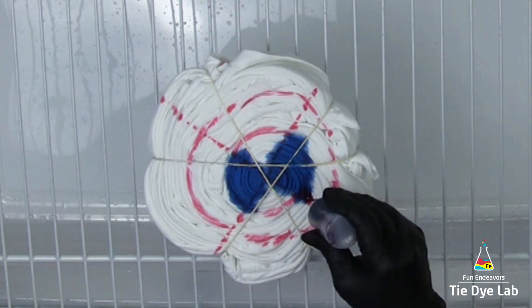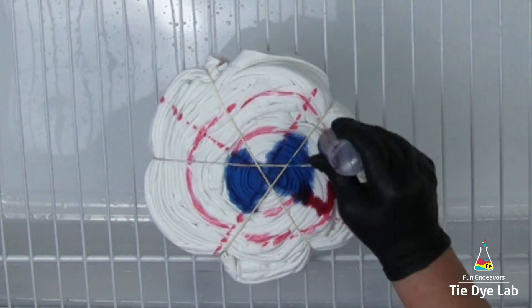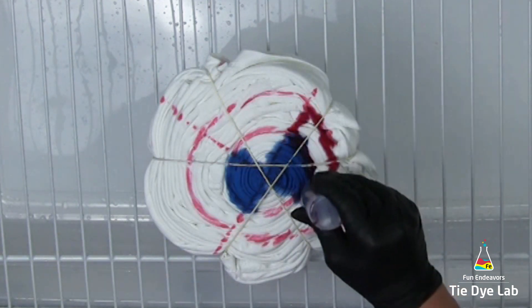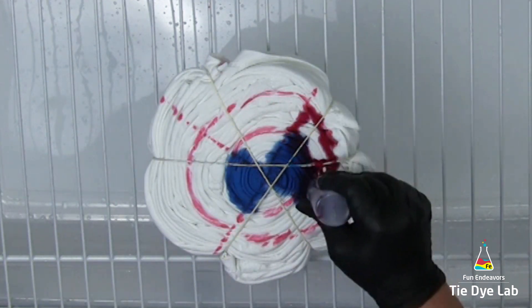Then the next color is Dragon Fruit from Dharma Trading Company. And I'm using that on the two middle sections across from each other.